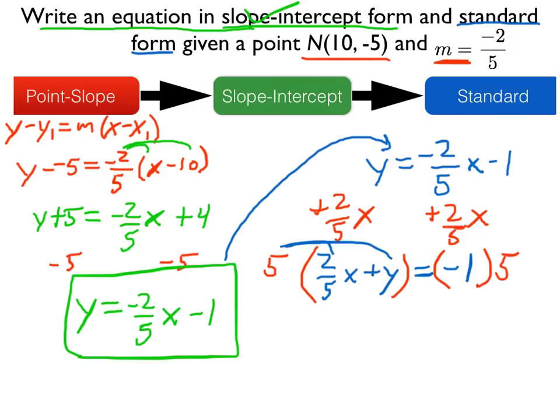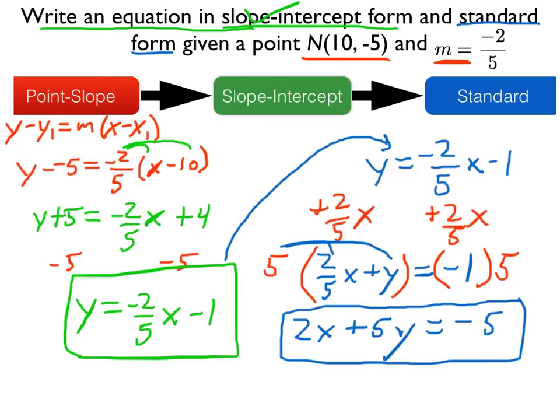5 times 2 fifths x is 2x. 5 times y is 5y. And negative 1 times 5 is negative 5. And so there we have the standard form of our equation. Now we've done both parts of the problem: slope-intercept form in green and standard form in blue.